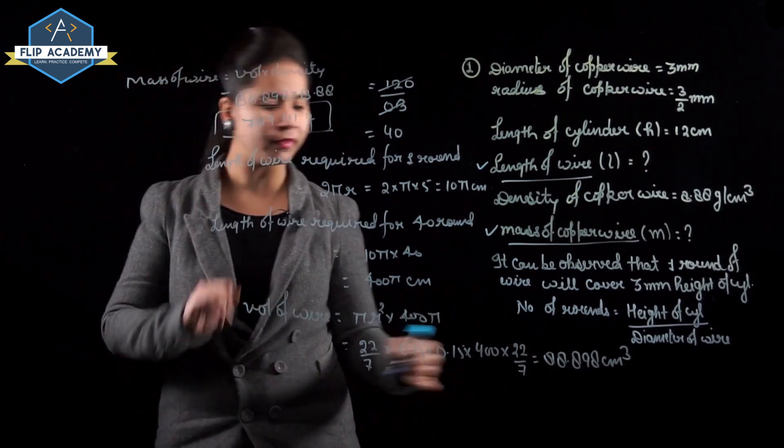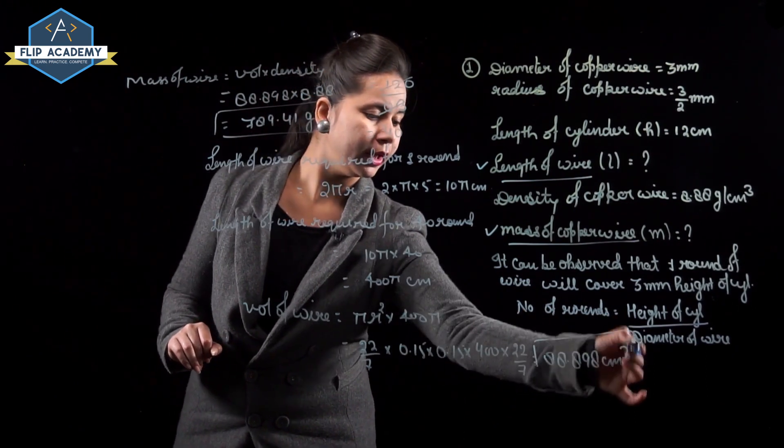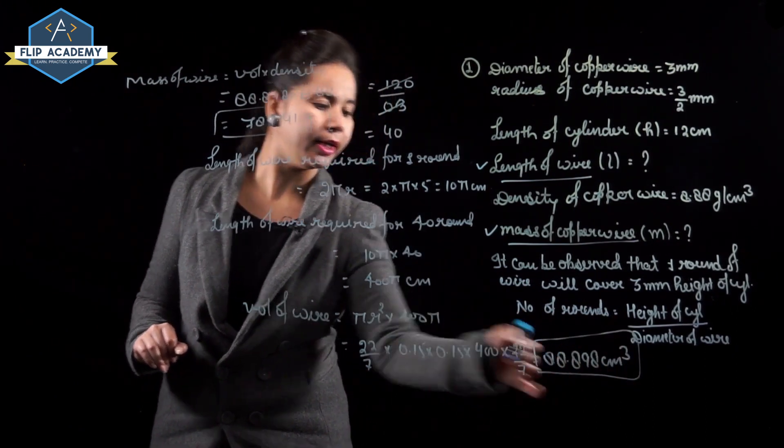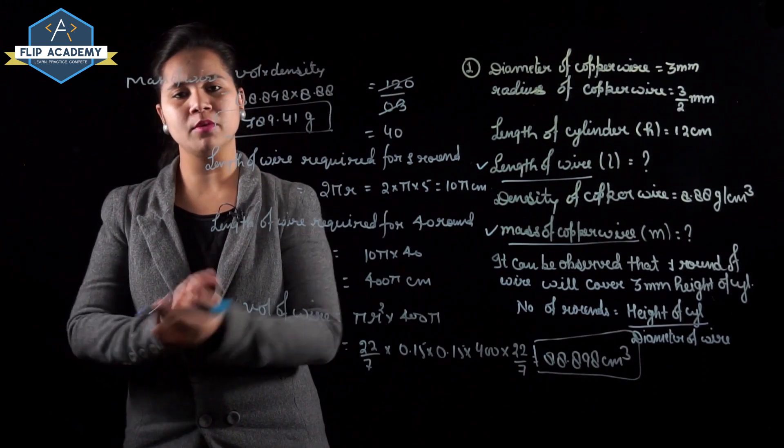Volume of the wire is 88.898 cm³. Question 1 is complete. Moving to Surface Area and Volume Exercise 13.5, Question 2.